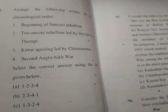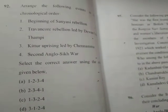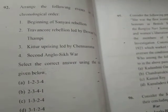The events to arrange are: the Sanyasi Rebellion, the Travancore Rebellion led by Velu Thampi, the Kittur uprising, the uprising led by Channamma, and the Second Anglo-Sikh War. Select the correct chronological order from the options given below. This is an important portion for UPSC.